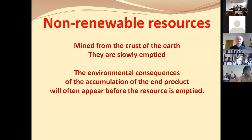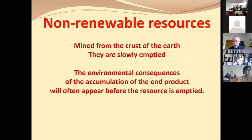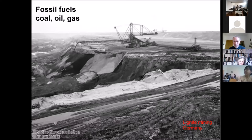A few comments about resources, starting with non-renewable resources. These are resources mined from the crust of the Earth, and of course they are slowly emptied because they are finite and non-renewable. But the environmental consequences of this mining and the accumulation of end products is often more serious long before the resource is actually emptied. You have two kinds: fossil fuels — coal, oil, and gas — mined from the Earth. This is the scale of mining you see in Germany, some years back, but it's still going on.